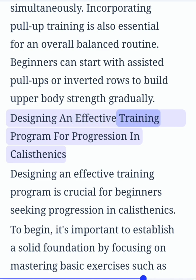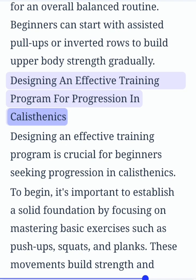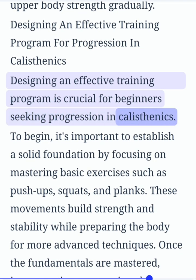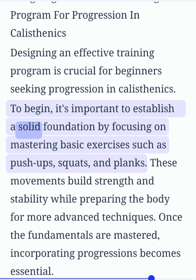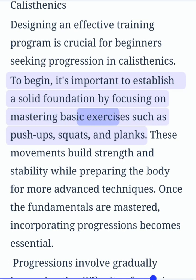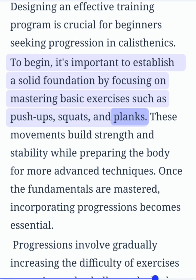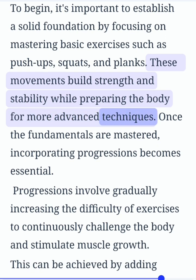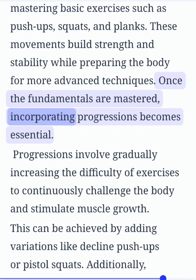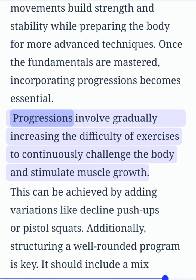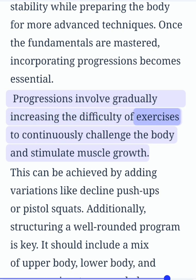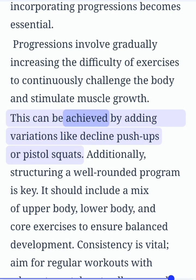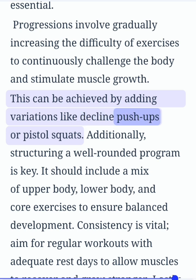Designing an effective training program is crucial for beginners seeking progression in calisthenics. To begin, it's important to establish a solid foundation by focusing on mastering basic exercises such as push-ups, squats, and planks. These movements build strength and stability while preparing the body for more advanced techniques. Once the fundamentals are mastered, incorporating progressions becomes essential. Progressions involve gradually increasing the difficulty of exercises to continuously challenge the body and stimulate muscle growth. This can be achieved by adding variations like decline push-ups or pistol squats.